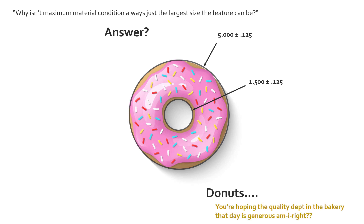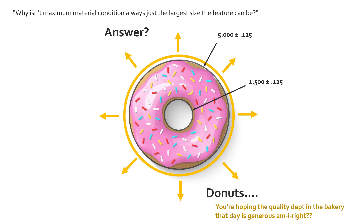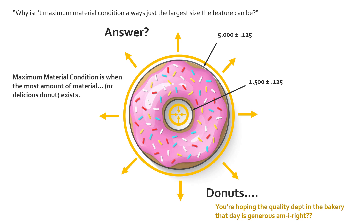If we walk into the bakery that day, we're hoping the quality department is being generous — they're going to give us the most amount of donut. If you want more donut, go with the largest outside diameter. And if we have a smaller inside diameter, that's going to give us more donut as well — we're maximizing the amount of material, or in this case, the amount of delicious donut.